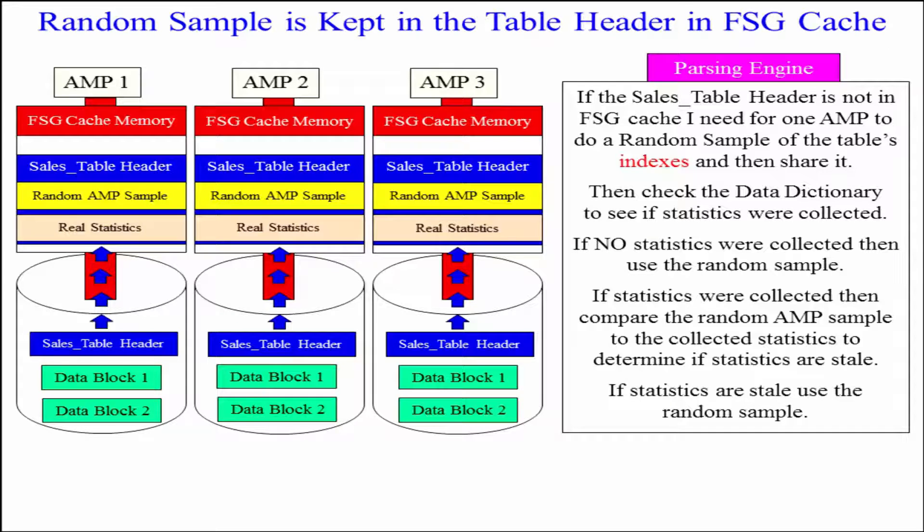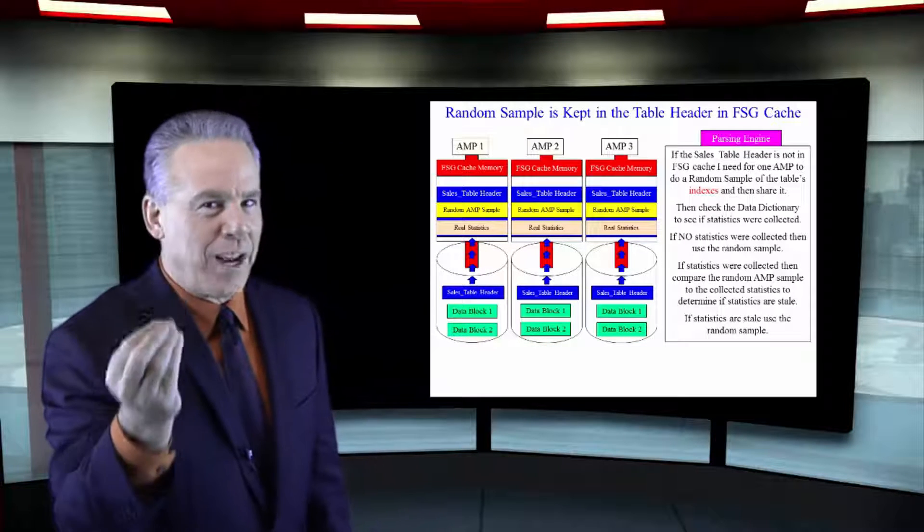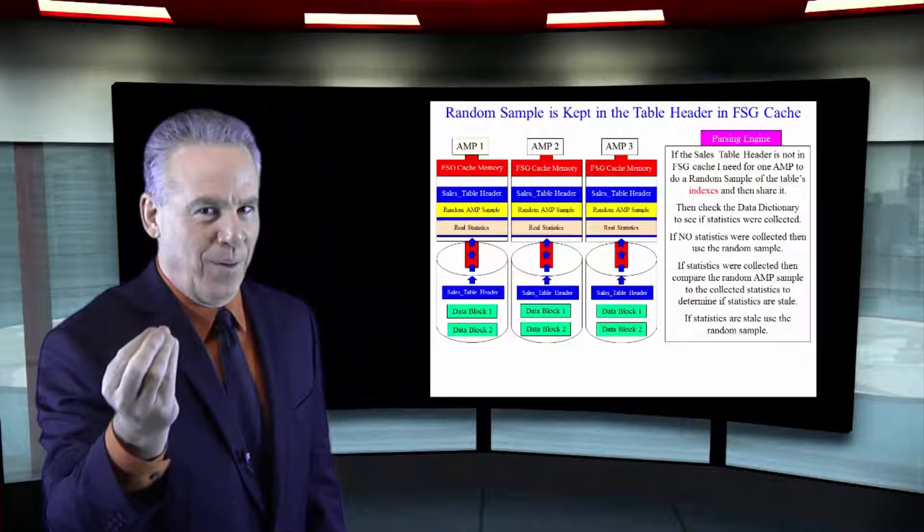Now, if we're in a scenario where they say, hey, did they collect statistics on the table? They did not. Well, then they'll do the random AMP sample, put that in the table header, and then they'll use the random AMP sample.